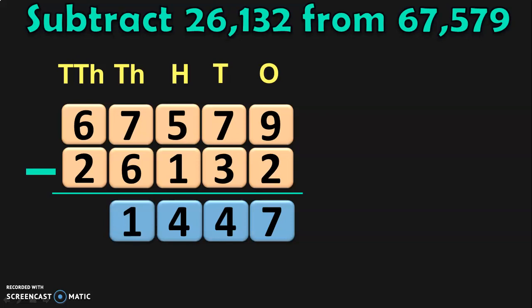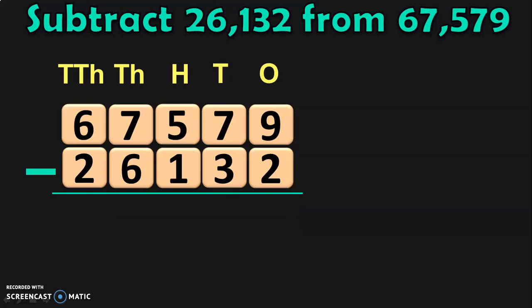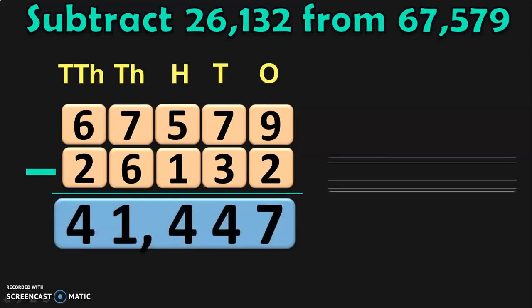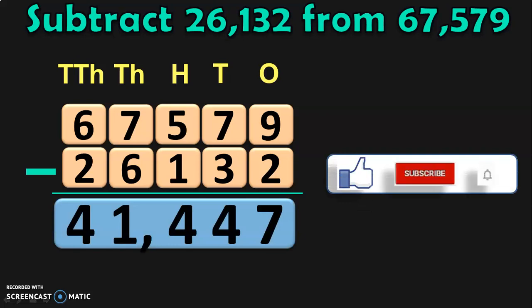Next, finally, move on to the ten thousands place where you have 6 minus 2, and 6 minus 2 is 4. So, the subtraction of these two 5-digit numbers, 67,579 minus 26,132, will give you the answer 41,447.